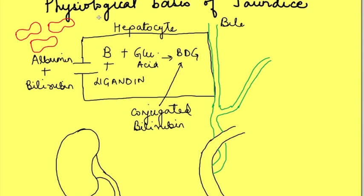A quick recap of how bilirubin is excreted from the body. Bilirubin is produced due to destruction of RBCs and catabolism of hemoglobin. In blood it is in bound form, that is bound to albumin. Then in the liver it enters into hepatocytes where it is conjugated to glucuronic acid, and finally it is excreted into the bile canaliculi. From there it reaches the small intestine, where it is acted upon by microbes of the gut which produce a compound known as urobilinogen.